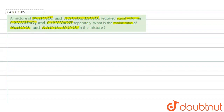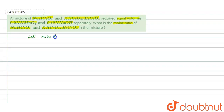In the question, a mixture of NHC₂O₄ and KHC₂O₄·H₂C₂O₄ requires equal volumes of KMnO₄ and 0.12 normal NaOH. We have to find the molar ratio. KMnO₄ will titrate the NHC₂O₄ and KHC₂O₄·H₂C₂O₄ solutions, and NaOH will neutralize these solutions. Let the moles of NHC₂O₄ and KHC₂O₄·H₂C₂O₄ be x and y respectively.